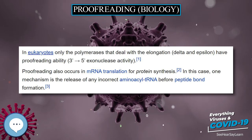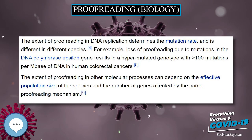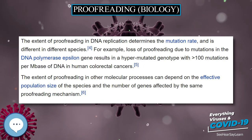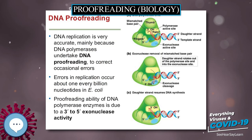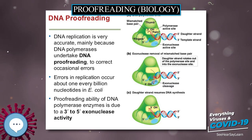Proofreading also occurs in mRNA translation for protein synthesis. In this case, one mechanism is the release of any incorrect aminoacyl-tRNA before peptide bond formation.